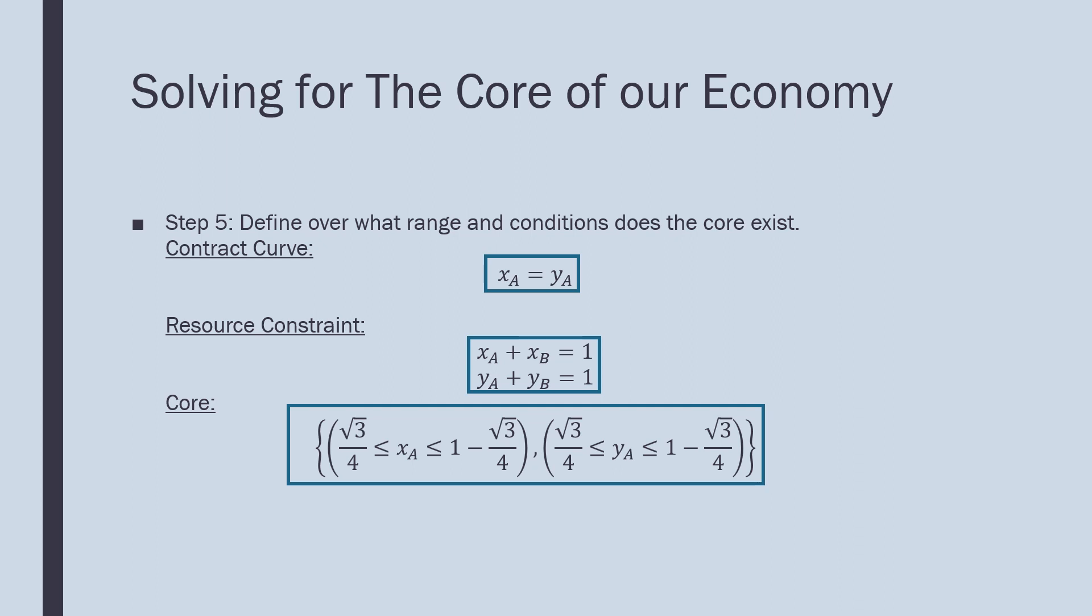The core is defined by this in set notation. We say that xa is on this closed interval, between these two values: square root of three all over four and one minus square root of three all over four. Ya is also going to follow that pattern. This will become more clear when I show it in the picture on the next page.